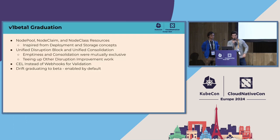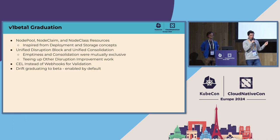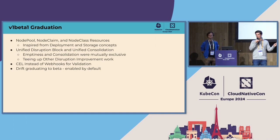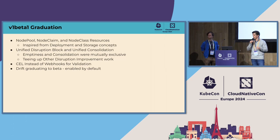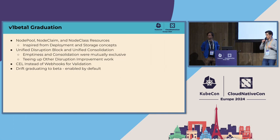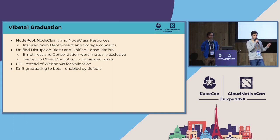For Karpenter project updates: v1beta1 graduation. We announced v1beta1 last KubeCon NA, introduced in November 2023 as the natural progression from our v1alpha5 APIs. We went through various iterations of alpha APIs and repositioned our resource naming to remove technical debt and align with upstream Kubernetes concepts — coinciding with our acceptance into SIG Autoscaling. We originally had resources called Provisioner, Machine, and NodeTemplate; we realigned around NodePool, NodeClaim, and NodeClass.